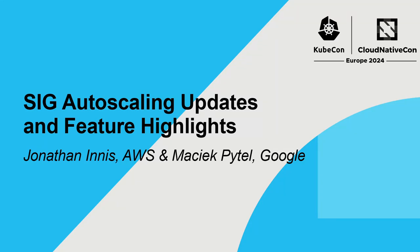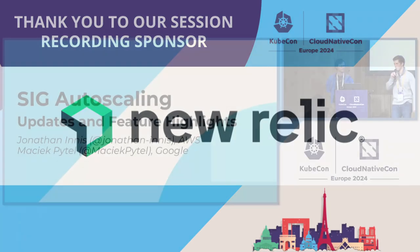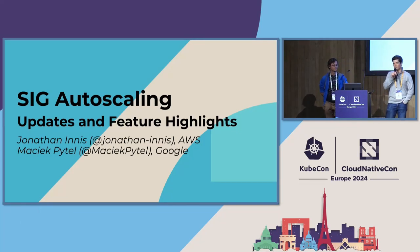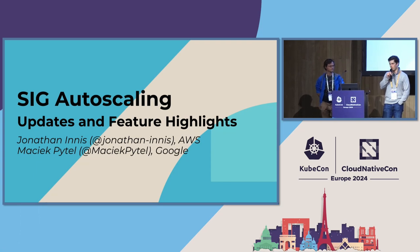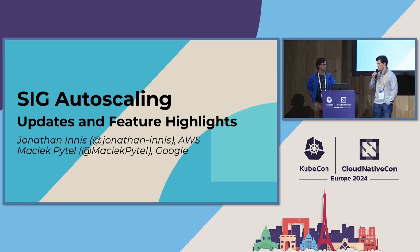Hello everyone. Thank you for attending the SIG Autoscaling feature and general update talk. I know it's a little bit late on a Thursday, but I'm glad everyone's here. My name is Jonathan Ennis. I am an OSS maintainer of an autoscaling project called Karpenter at AWS and a software engineer there. And this is Maciek Patel, and he's a software engineer at Google.